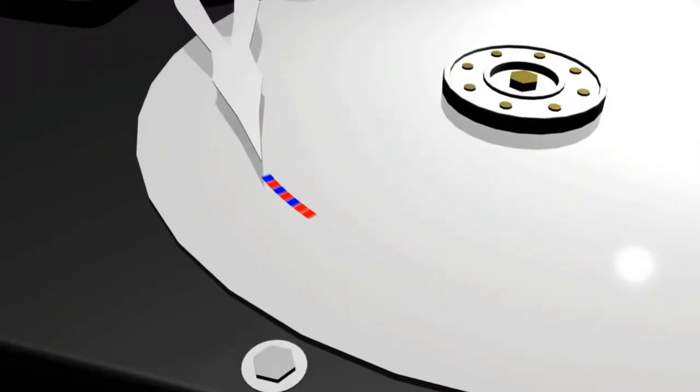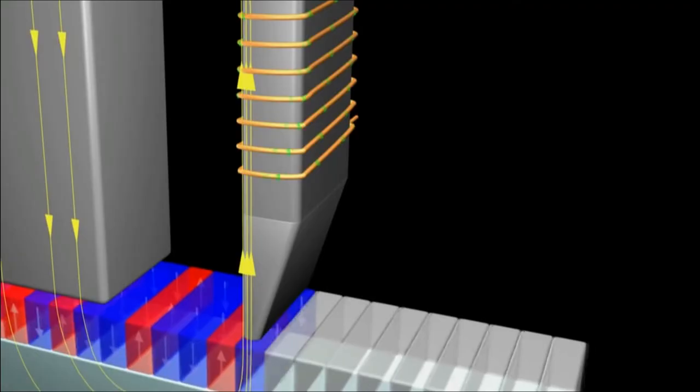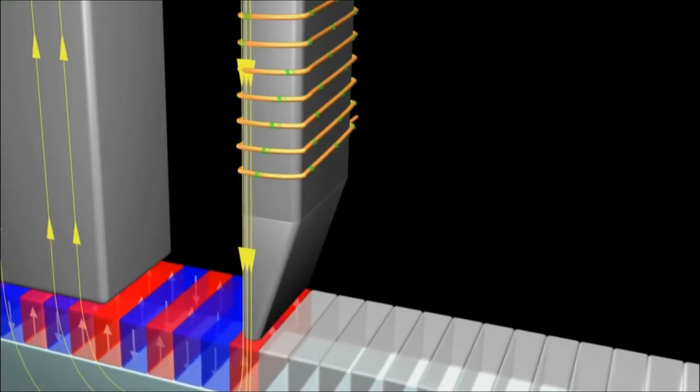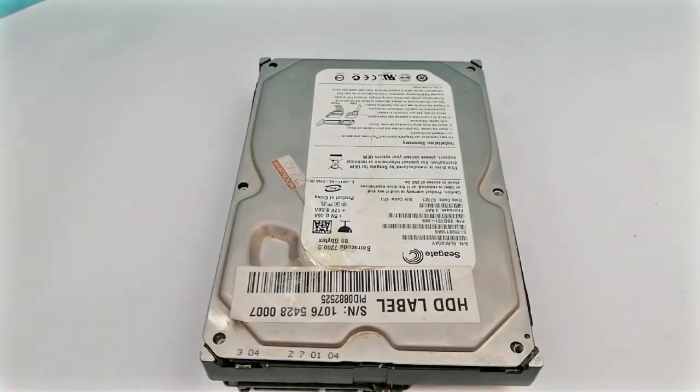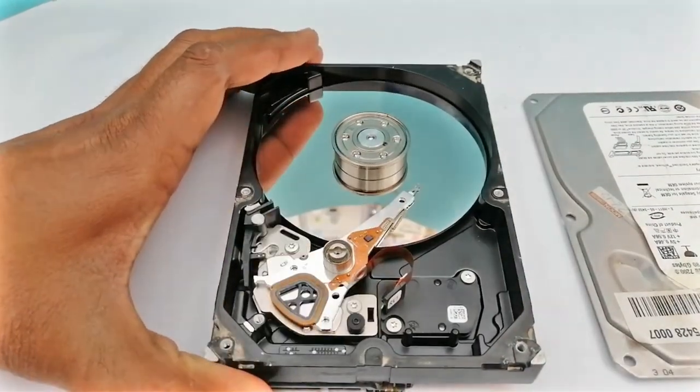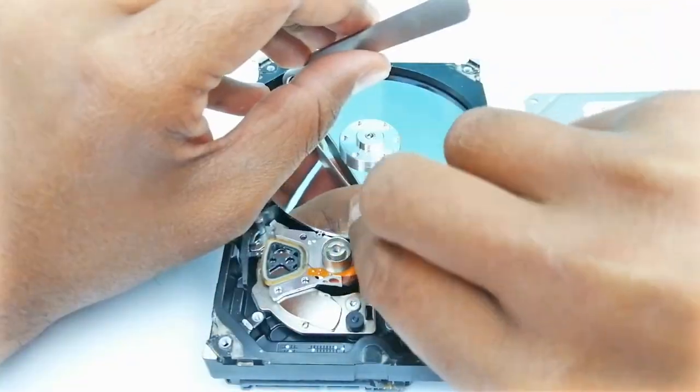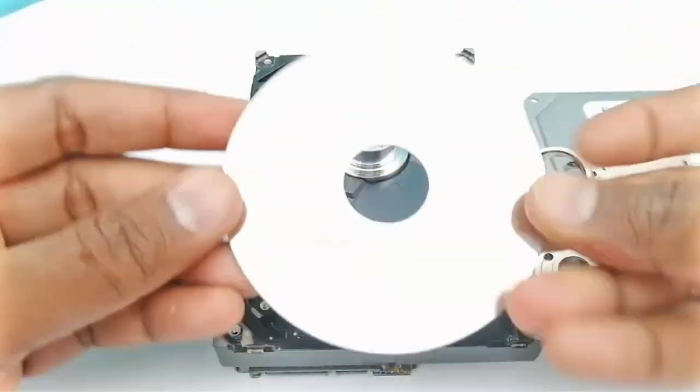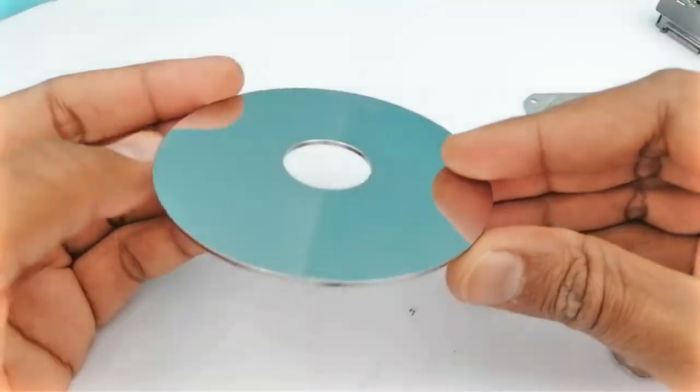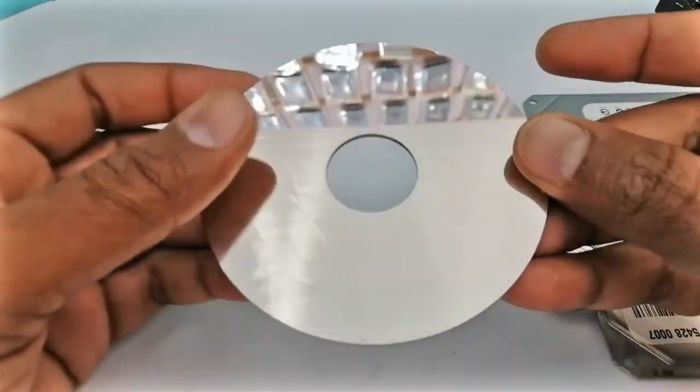In a computer hard disk, it saves zero or one by magnetizing a particular part of the hard disk, which is later identified with the help of the current that they produce. If we open a hard disk drive and look inside it, we only see one metal disk. We hope you understand how a hard disk works. At the end, we just expect you to like the video.